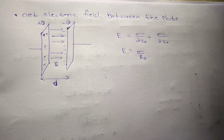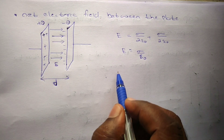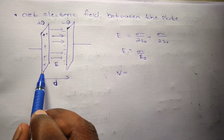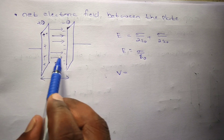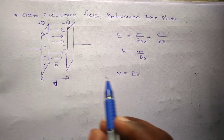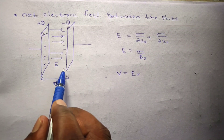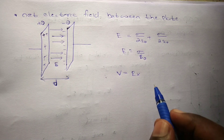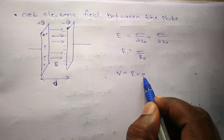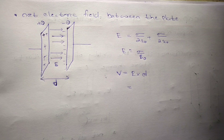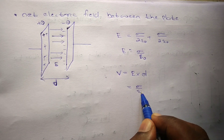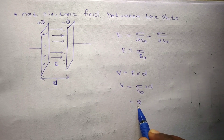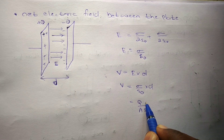Now we find the potential difference between the plates. The potential difference V equals the electric field between the plates multiplied by the distance D between them. Substituting E equals sigma by epsilon naught, we get V equals sigma D by epsilon naught. Since sigma equals Q by A, we get V equals Q D by A epsilon naught.